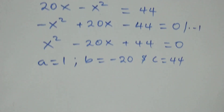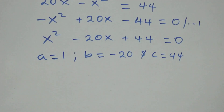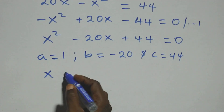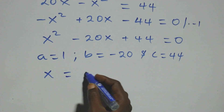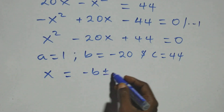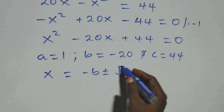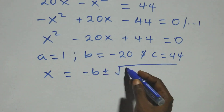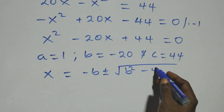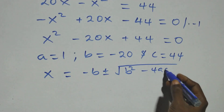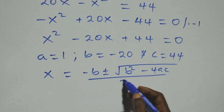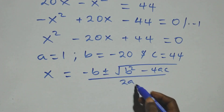Apply the quadratic formula, which is x equals minus b plus or minus square root of b squared minus 4ac, all over 2a.